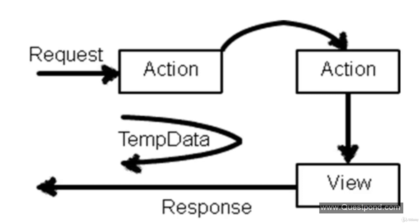TempData can also preserve values for the next request depending on four conditions. Let us make a full statement: TempData helps to maintain data for a single request — that means when your request goes from action to action and from action to a view, TempData is maintained throughout the single request. But additionally it can also preserve values for the next request depending on four conditions.